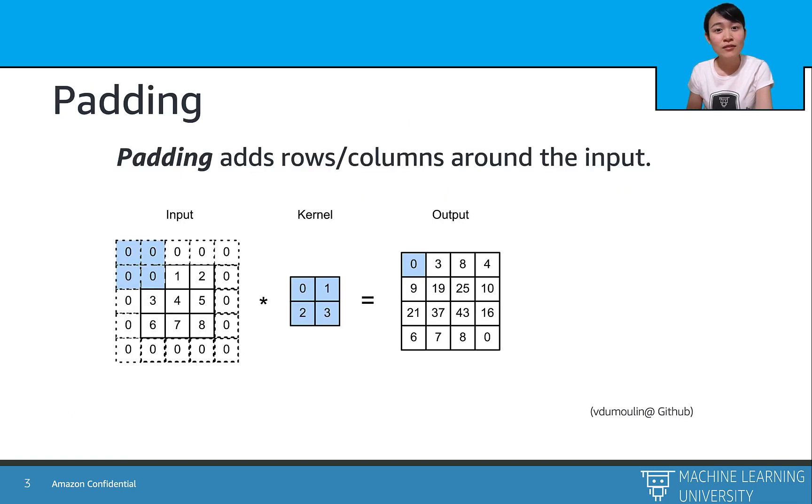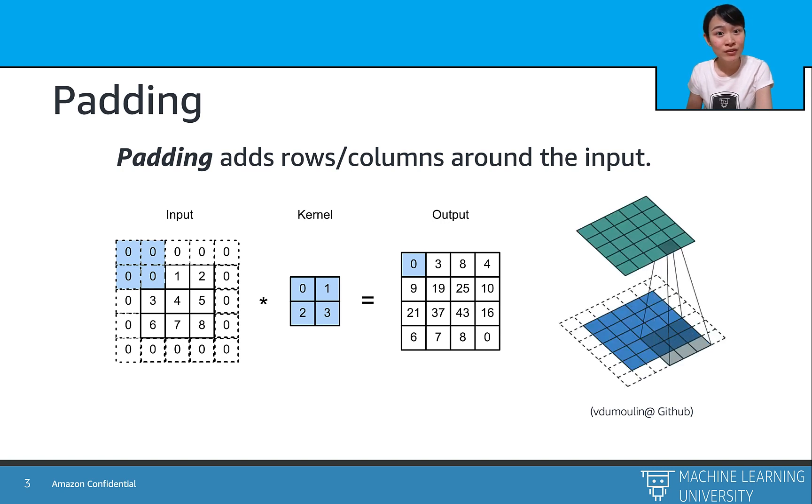What does padding do? Padding adds a bunch of rows and columns around the input images. In this example, we are padding with one row and one column, and we follow the same kernel calculation for the outputs. On our right, here is a great illustration on how the padding works.